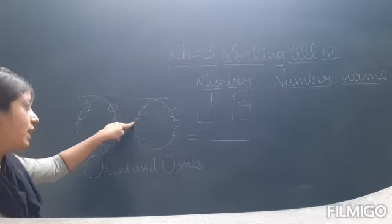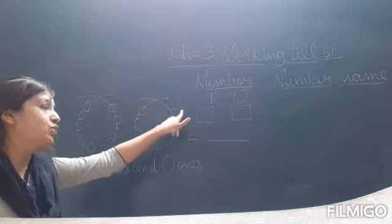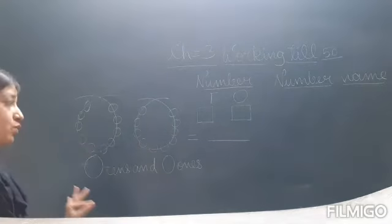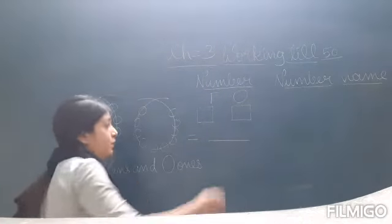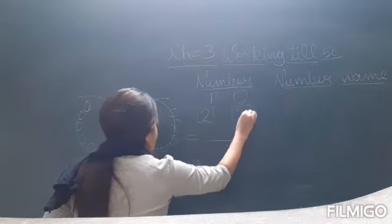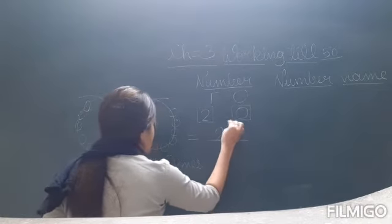Now here, 11, 12, 13, 14, 15, 16, 17, 18, 19, 20. So in both circles, 20 zeros are there. So we have to put here 20. Here also we have to put 20.